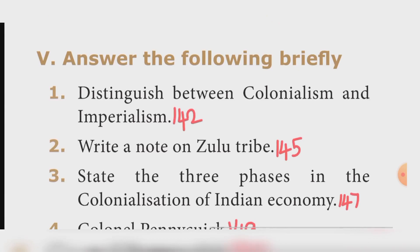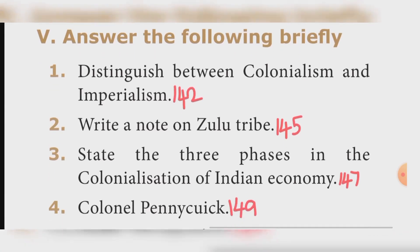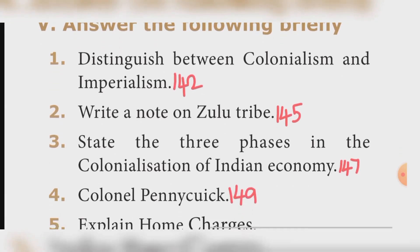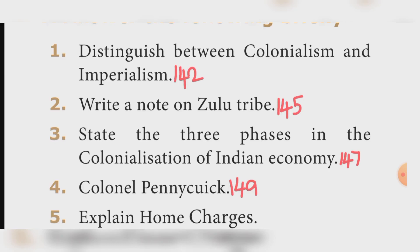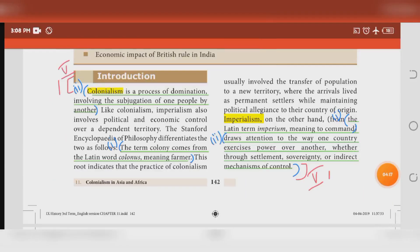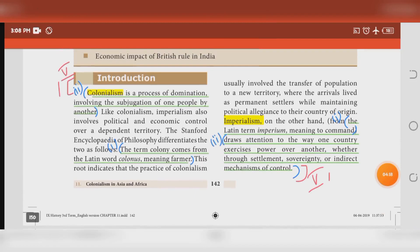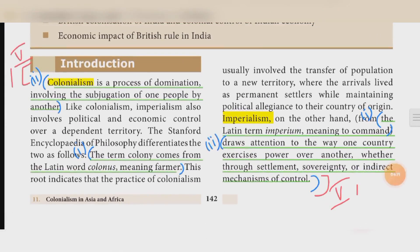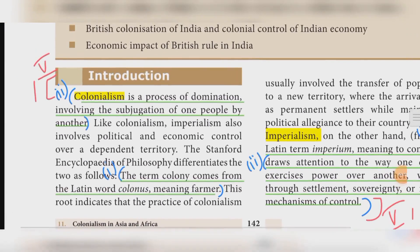Fifth section: Answer the following briefly. Question one — Distinguish between colonialism and imperialism. The answer is found on book page 142. We have the topic of colonialism and imperialism.